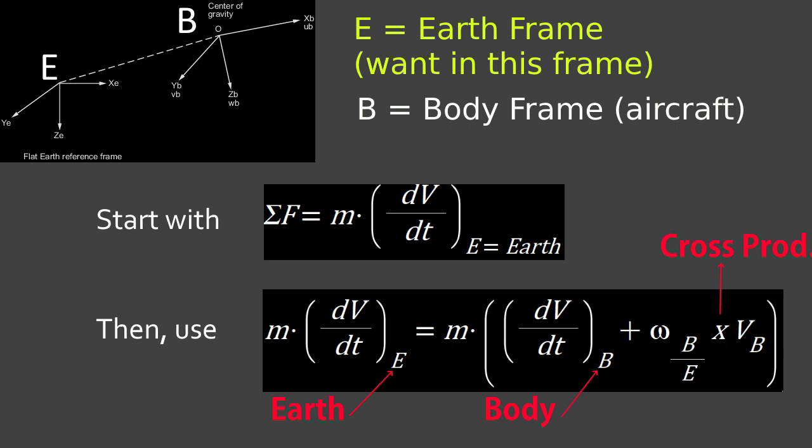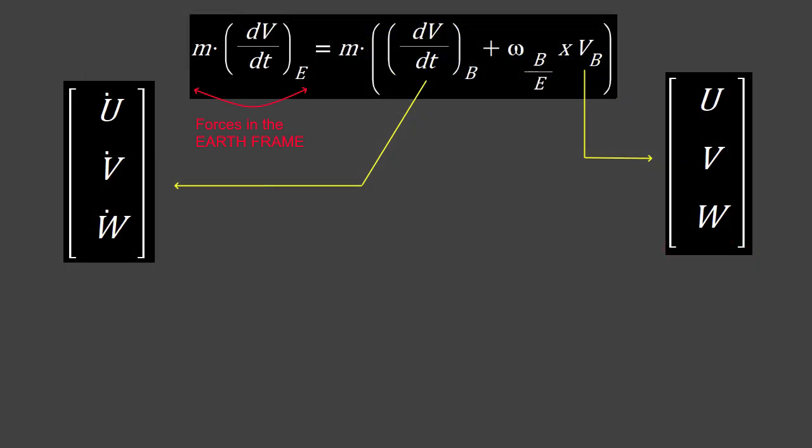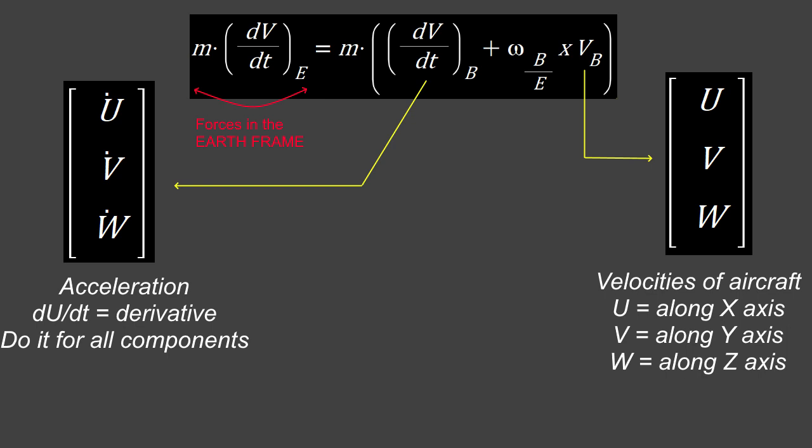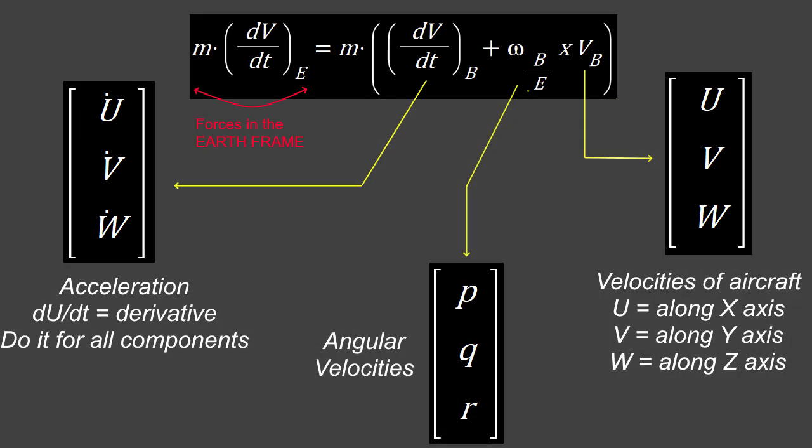Next, you also have u dot, v dot, and w dot, as that is the acceleration. That's your dV over dt in the body frame, and VB is simply u, v, w. These are the velocities as I mentioned before along the X, Y, and Z axes. Omega B over E equals angular velocities P, Q, and R.